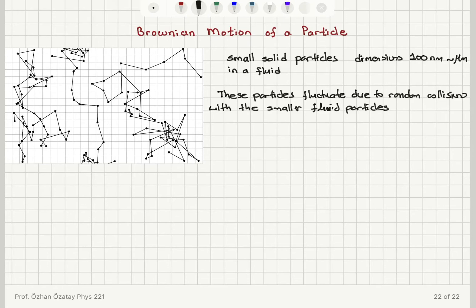For example, if we do this in water, these would be water molecules or it could be due to collisions between themselves as well. So why is this fluctuation so noticeable and easily measurable? Well, first of all, we have a small number of them, small number of particles.